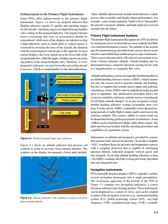Enhancements to the primary flight instruments. Some PFDs offer enhancements to the primary flight instruments. Figure 2-2 shows an airspeed indicator that displays reference speeds, V-speeds, and operating ranges for the aircraft. Operating ranges are depicted using familiar color coding on the airspeed indicator.